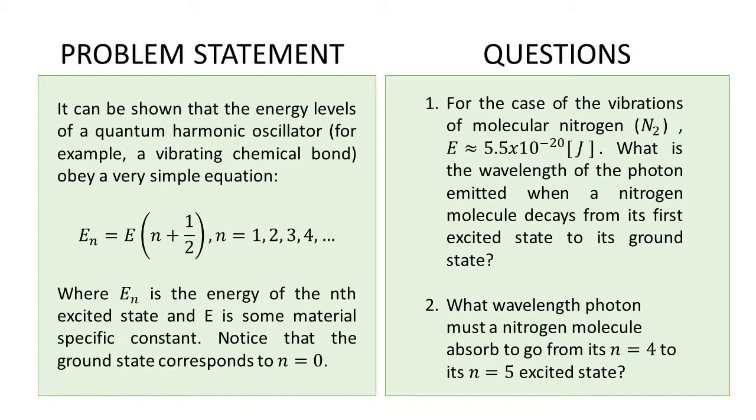That is E_n equals the energy times n plus one half, where n can be any integer 1, 2, 3, or 4. n can also be zero and this represents the ground state of our system. That is our specific constant energy of the ground state. Then we multiply each ground state by 1 plus 1/2, 2 plus 1/2, to get to each excited state. The two questions we're going to be looking at for this problem are: